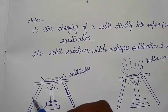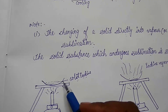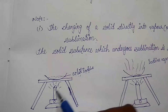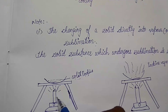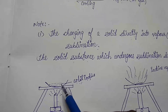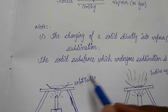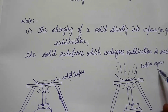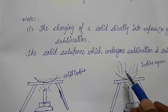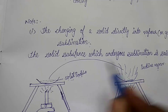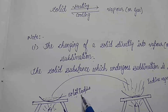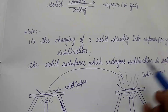Let us take an example to understand this. We have taken a tripod stand, and over it we have kept a china dish filled with solid iodine. We have taken a burner and start giving heat. When we start giving heat, we observe that the iodine, which is in solid form, starts changing into vapor form directly, without changing into liquid.